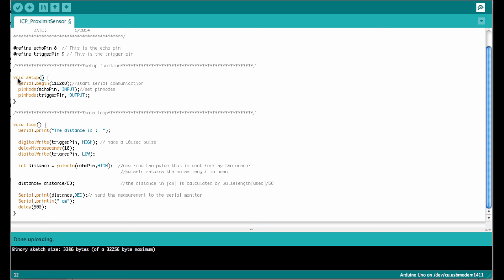In the setup function, we start out with opening a serial port. Here we use a baud rate of 115,200. And then we define the pin mode of the echo pin as input. That's where the signal is coming back. And the trigger pin is defined as output. This is the pin we use to tell the sensor to start the measurement.